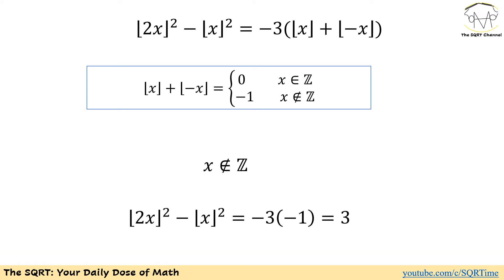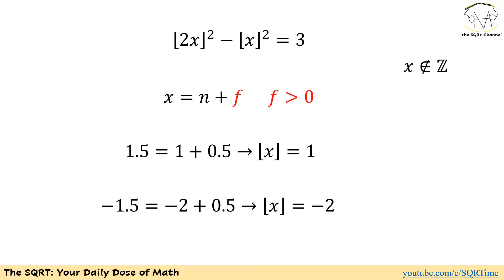Now let's move on to the case where x is not an integer. In this case, the right-hand side simplifies as negative 3 times negative 1, which equals 3. Keeping the left-hand side as is, we arrive at the equation: floor of 2x to the power of 2 minus floor of x to the power of 2 equals 3. We still have floor of x and floor of 2x, and we need to simplify further.